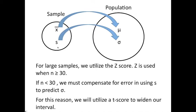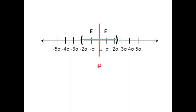If the number in the sample is less than 30, we have to compensate for error in s in predicting sigma. For this reason, we'll use a t score to widen out our interval. Look at the effect size here in this diagram. The effect size could be z times some standard deviation, which gives us the distance below the mean and the distance above the mean required to trap a certain percentage of data.